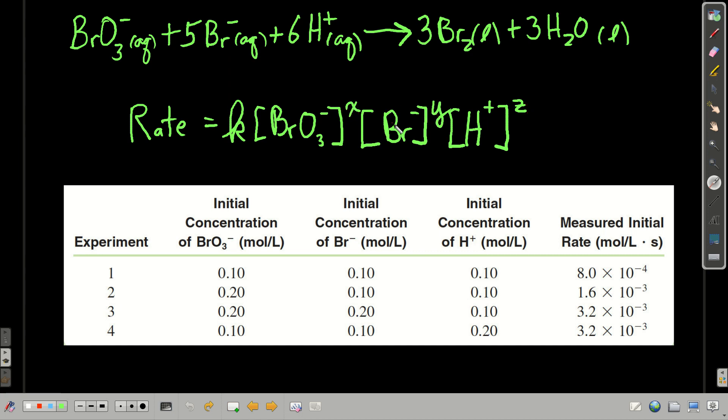Our goal is to find x, y, z and k. And we have some data. We need data to do this, and this table gives us that data. We have four experiments that we can use.